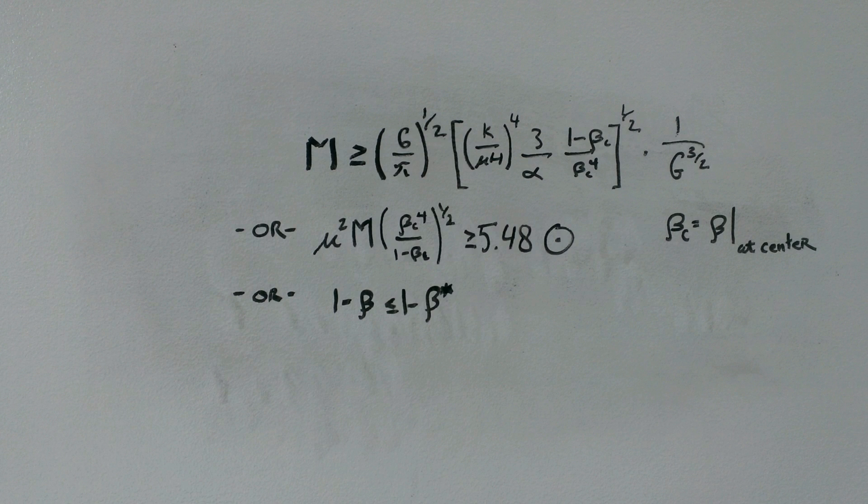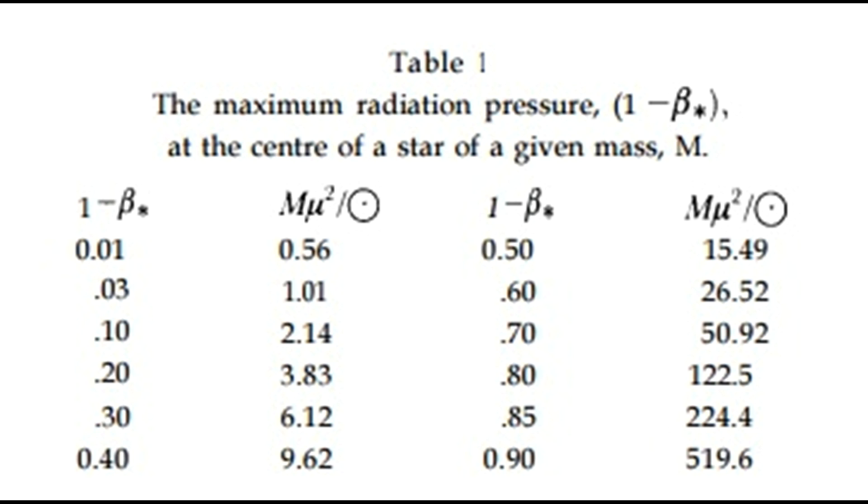Here, 1-beta star is the maximum amount of radiation pressure. This can be found in terms of measurable values, and we can construct a table of these. Since mu is about 1.0, we can see that the maximum amount of radiation pressure for a star the size of the sun is only about 3%.